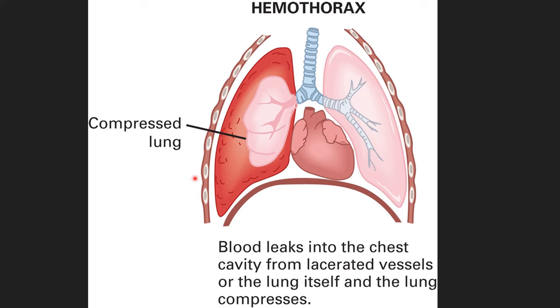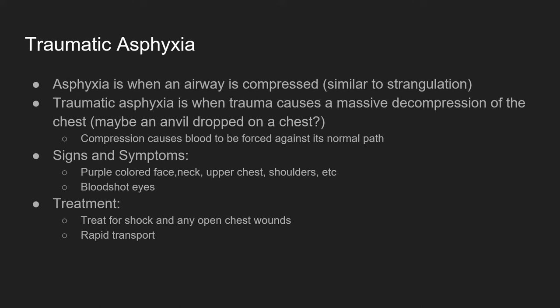Here's an example of a hemopneumothorax or hemothorax — we have bleeding from somewhere inside the lungs where blood is filling up and pressing on a lung. Traumatic asphyxia is caused when our chest is compressed very suddenly for a short amount of time — a compression injury forcing blood to move against its normal path. It's going to cause ruptured blood vessels above the chest: bloodshot eyes, ruptures in the face, neck, and shoulders, turning purple and bruised. Treatment: treat for shock, address any open chest wounds with occlusive dressings, and rapid transport.